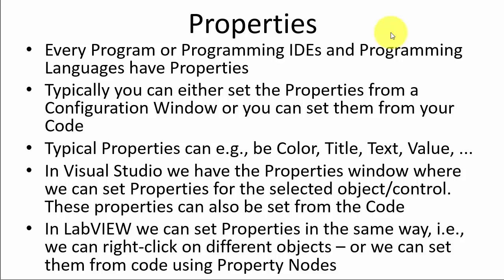Typically these properties can either be set from a property window. In Visual Studio we have a properties window where you can click on a control and change its properties, or we can do this from our code. In LabVIEW we can do the same — set properties by right-clicking on objects in a property window, or from code using so-called property nodes.